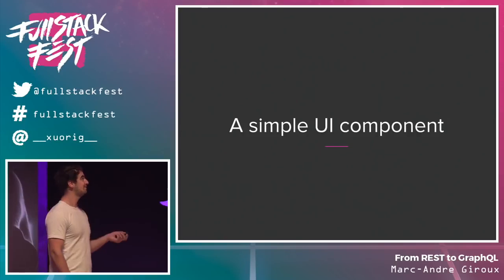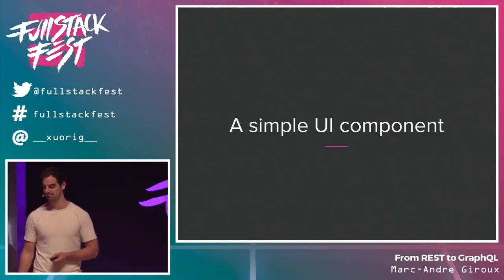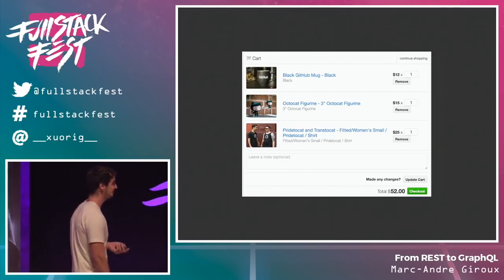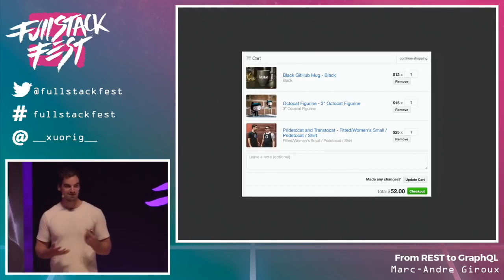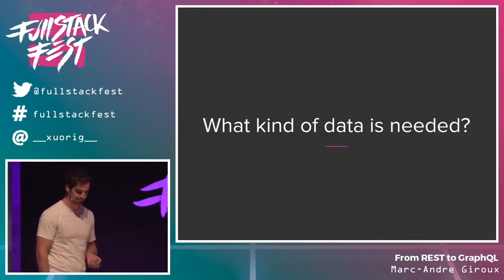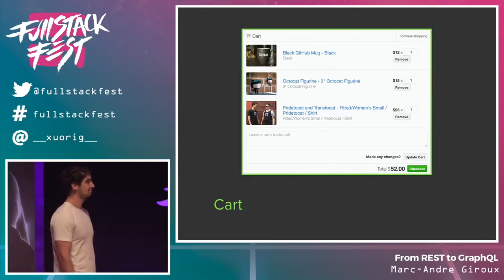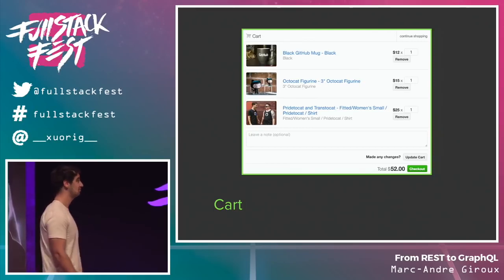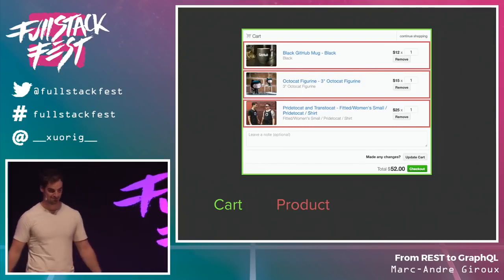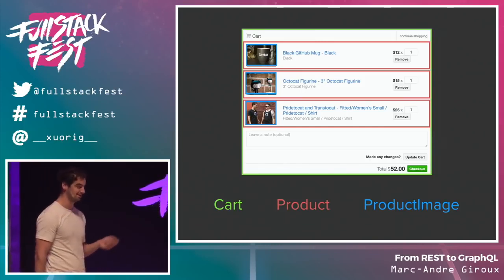I want to start with a simple UI component and walk through how we could get data to populate it. For example, this is a shopping cart in the GitHub shop. It's pretty simple, but we still need a lot of data to render all this. We have a cart resource with probably a total and it has products, each with a title, description, price, and a product image containing the URL and any metadata we need.